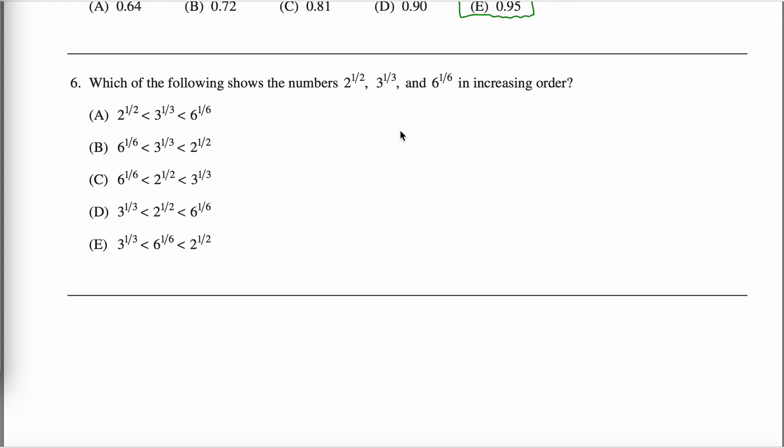There might be some clever logic where you can just look at these and figure it out, but I'm not clever enough. But what I am clever enough to do is recognize that all of these are positive numbers. So if I raise them all to any positive power, the order will not change. If five is smaller than seven, then five squared must also be smaller than seven squared.